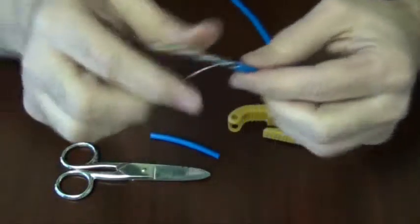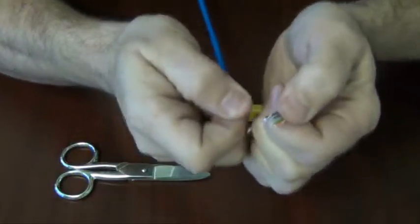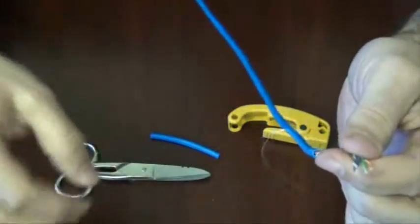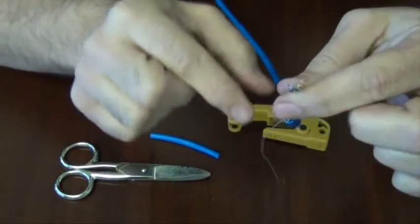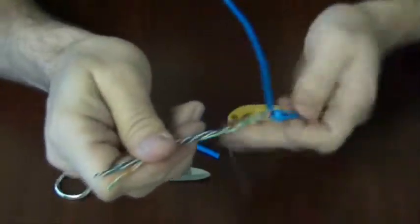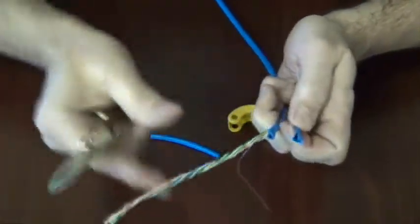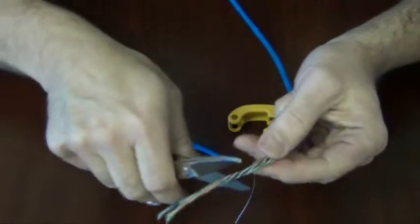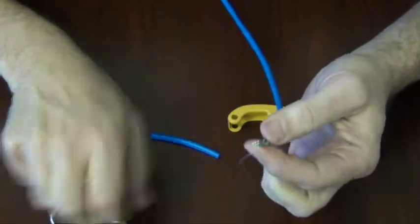You'll notice you have a little string here. What the string is for is so you can actually pull it additionally a couple inches down. The reason why you want to do that is because you might have scored the wire here accidentally when you trimmed it back. So this way, the actual wire you're going to be using doesn't have any abrasions on it, or cuts, or anything that could possibly compromise your final connection.